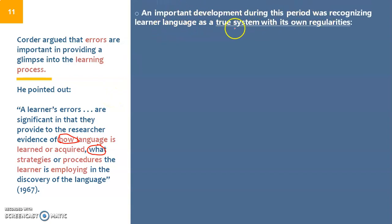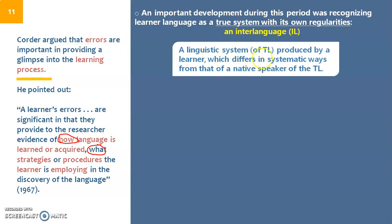An important development during this period was recognizing learner language as a true system with its own regularities, its own rules. Each learner has... called it the interlanguage. Memorize it this way: inter, that is enter inside your own language system. So it's a linguistic system of the target language. We were not talking about first language, we're always talking about second language acquisition. So while you are learning the second language, you build this linguistic system produced by a learner which differs in systematic ways from that of a native speaker of the target language. That is, let's say you are learning Spanish. When you are learning Spanish, you build this linguistic system that is different from the system that a Spanish person has or a person who is born in a Spanish-speaking country. We have our unique interlanguage system.